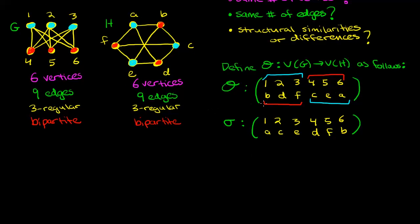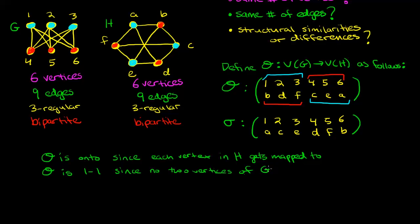First we observe that theta is onto since each vertex in H gets mapped to by something. Also theta is 1 to 1 since no two vertices of G will map to the same vertex of H. Therefore we know that theta is indeed a bijection.